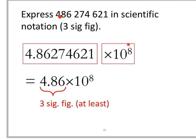ten to the power eight. And this number we can correct to three significant figures. Therefore we have 4.86 times ten to the power eight. So this is our scientific notation.